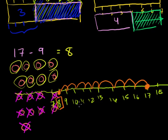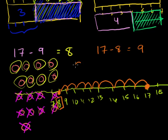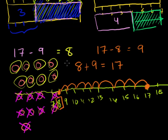This was cleaner and faster. But eventually you don't want to do this every time — you want to internalize it. Know by heart: 17 minus 9 is 8. And 17 minus 8 is 9. Why does this make sense? Because 8 plus 9 equals 17. When I say 17 minus 8, I'm asking: what number added to 8 gives 17? That's 9. When I say 17 minus 9, I'm asking: what number added to 9 gives 17? That's 8. All of these statements are saying the same thing.